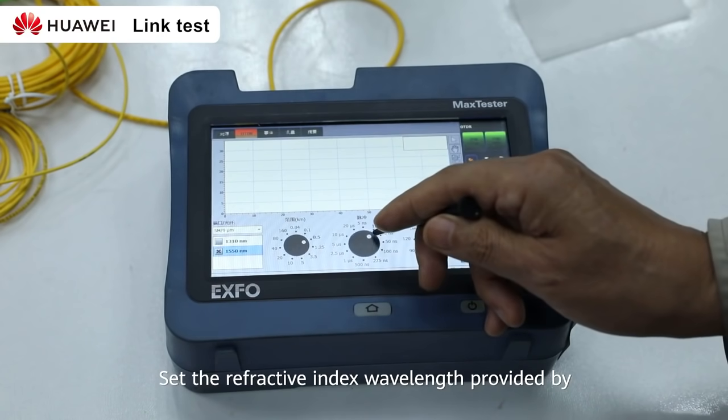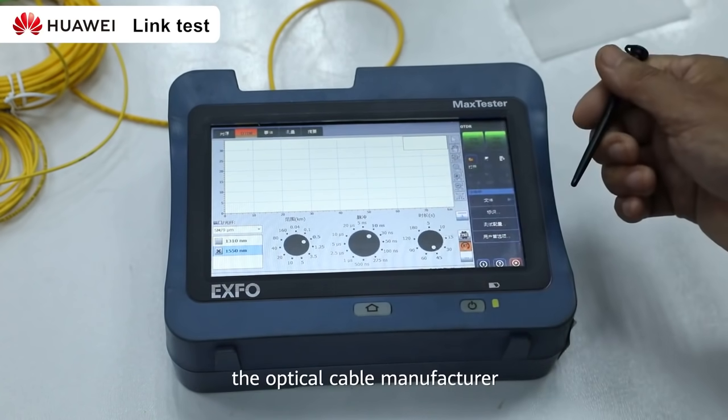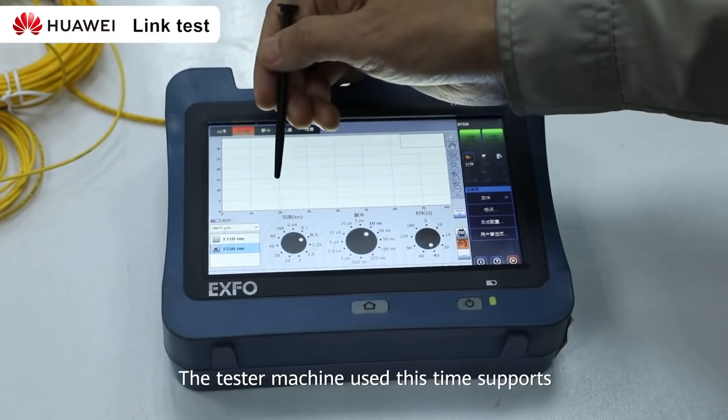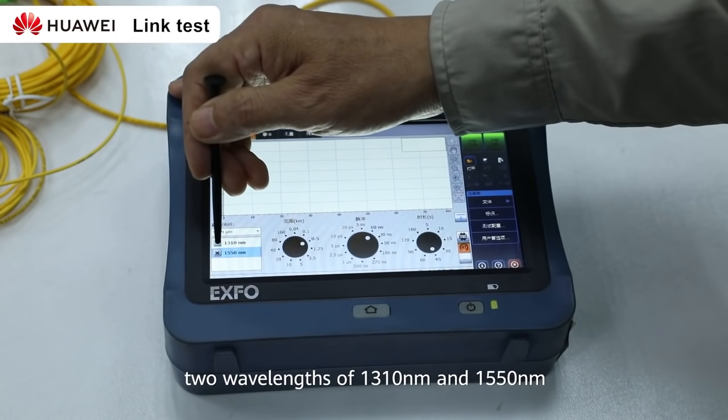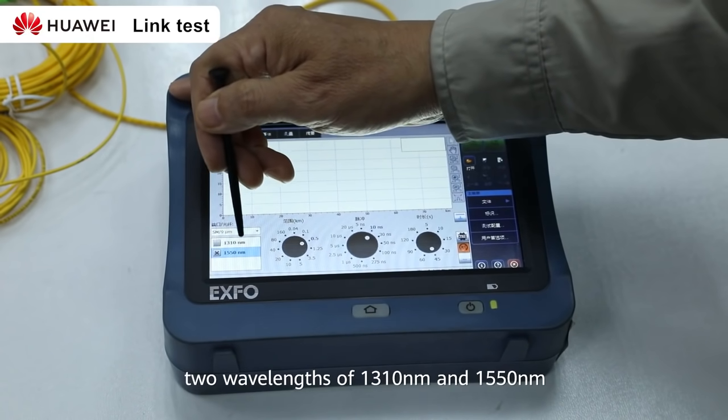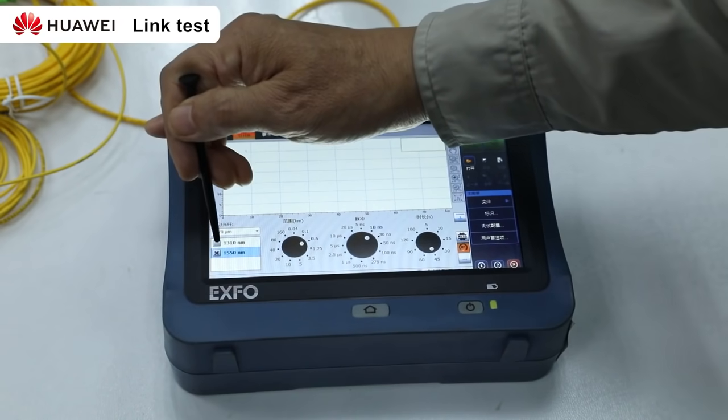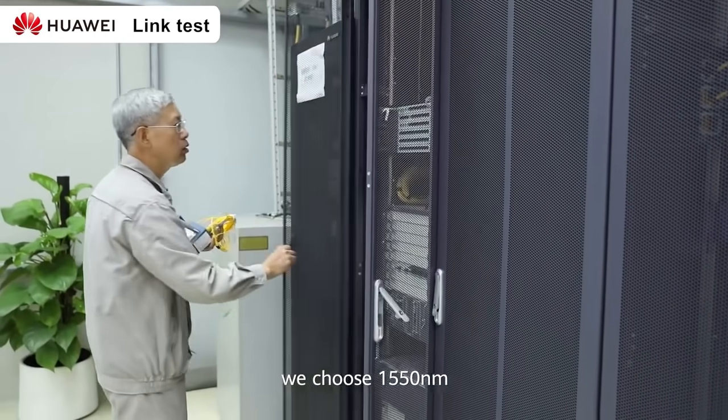Set the refractive index wavelength provided by the optical cable manufacturer. Select the wavelength again. The tester machine used this time supports two wavelengths, 1310 nm and 1550 nm. This time we choose 1550 nm.